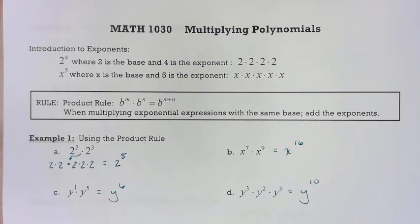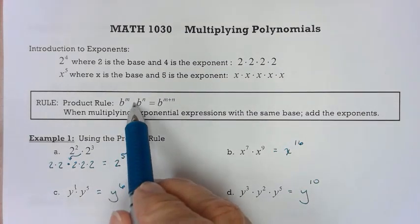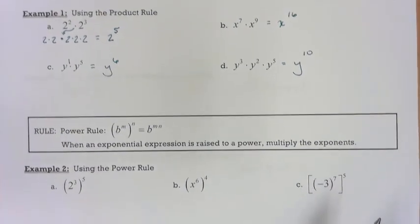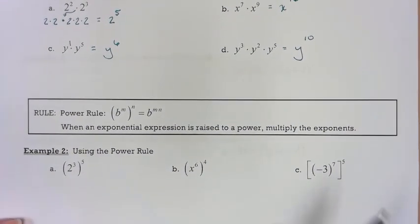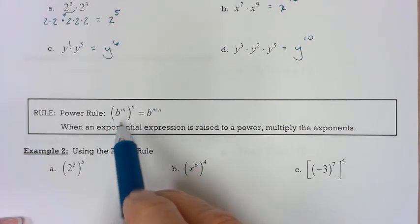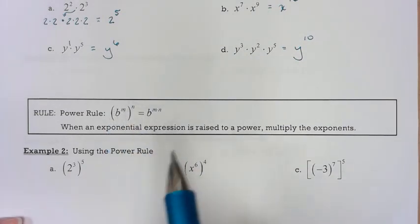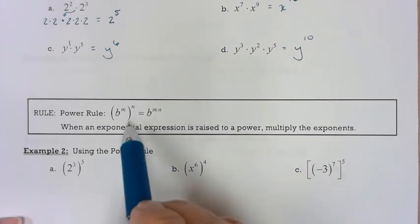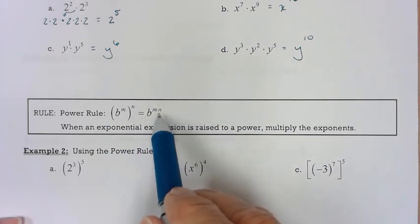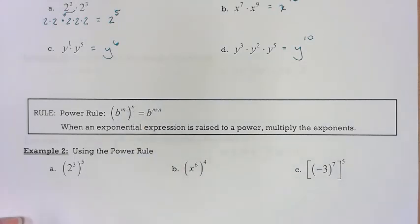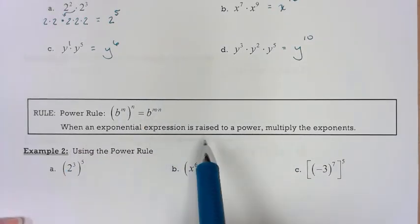That was the product rule because there's multiplication going on. The next rule is called the power rule. Notice there's a parenthesis — I have b raised to a power, and that in turn is raised to another power. To simplify this, you just multiply the two exponents. So when an exponential expression is raised to a power, you multiply the exponents.